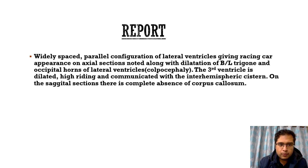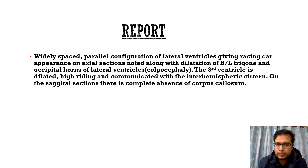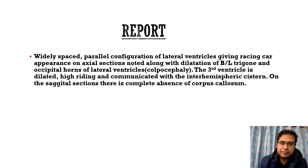This is the report that I had given. Widely spaced parallel configuration of the lateral ventricles giving a racing car appearance on the axial sections of both T1 and T2-weighted images, along with dilatation of the trigone as well as the occipital horns of bilateral lateral ventricles — that is colpocephaly. Along with that, there was dilatation of the third ventricle with high-riding third ventricle communicating with the interhemispheric cistern, and on the sagittal images there was complete absence of the corpus callosum seen on both T1 and T2-weighted images.